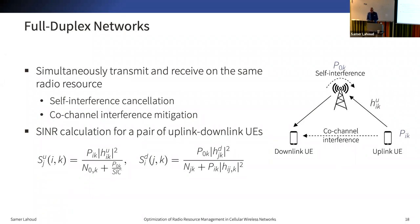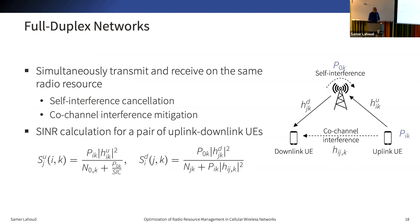For the uplink user, the SINR is equal to the transmit power P_ik multiplied by the channel gain H_ik, divided by a noise and interference term. The interference term corresponds to the self-interference: the power of the base station using the same resource to transmit, divided by a self-interference cancellation factor. Similarly, the SINR on the downlink for user j is P_0k multiplied by channel gain H_jk, divided by noise plus interference from the uplink user P_ik multiplied by the channel gain between both users.